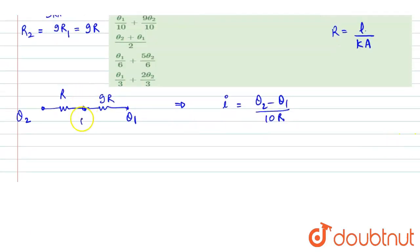Now, let's say this has temperature theta. This part of the resistance is also having this I current flowing through it. We can again use Ohm's law which will state theta2 minus theta equals I into R.